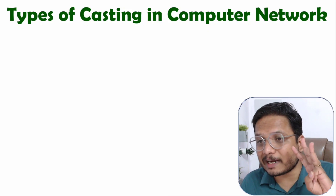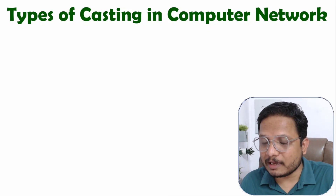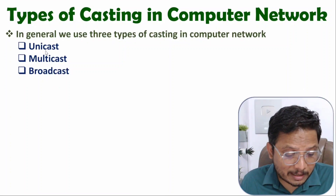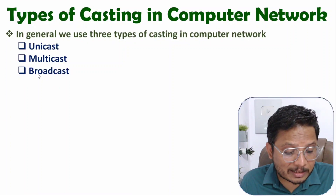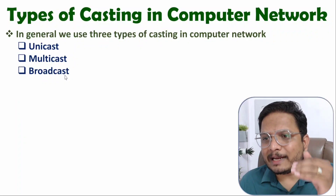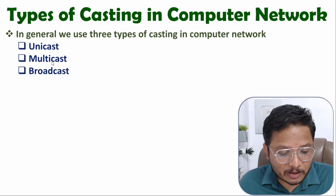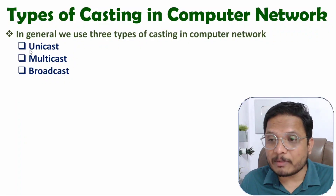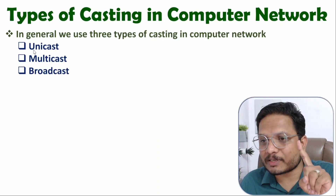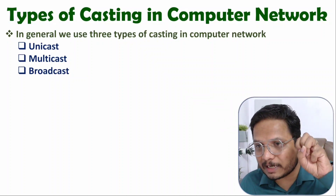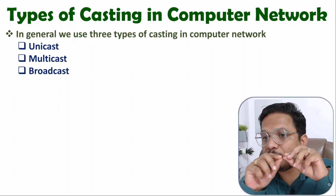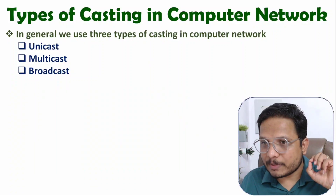Basically, there are three categories of casting in computer networks: one is unicasting, second is multicasting, and third is broadcasting. If you want to understand in layman's terms, then based on the name itself you can understand — 'uni' means one, so one-to-one data transmission is happening. There will be one transmitter and one receiver. That is how unicasting is done inside computer networks.